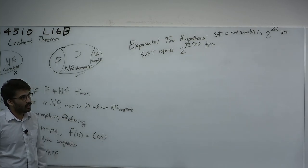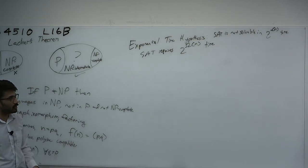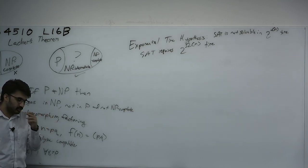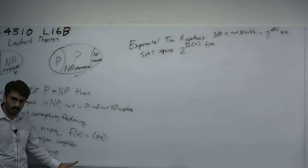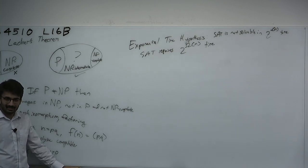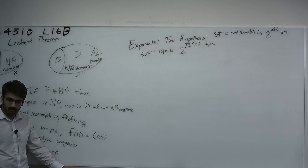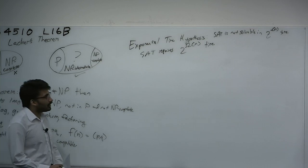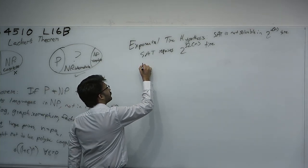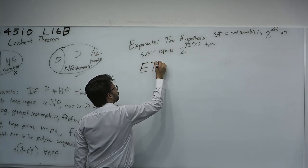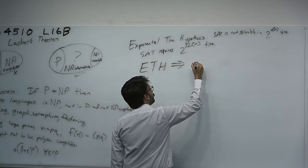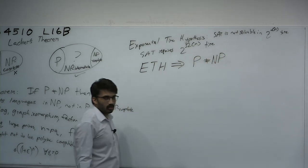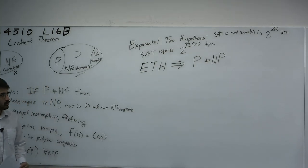This is a useful assumption because, recall, we proved the existence of NP-complete problems assuming P does not equal NP. But assuming ETH instead of P ≠ NP allows for some simpler proofs. ETH is a stronger and more general assumption than P ≠ NP. Why is it true that ETH implies P ≠ NP? Because if ETH is true — SAT requires exponential time and SAT is in NP — there would be one problem in NP but not in P.